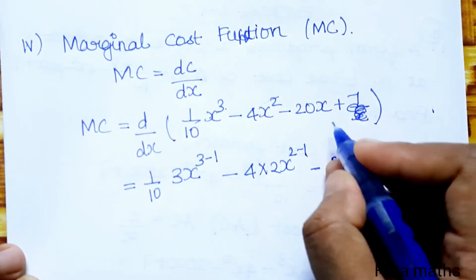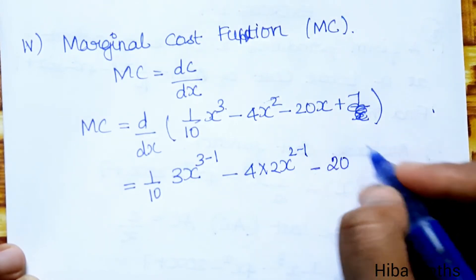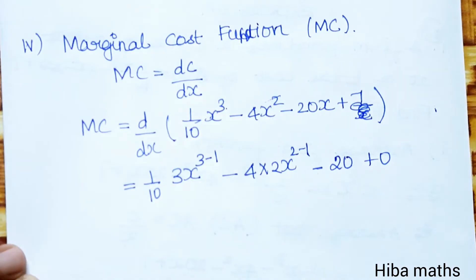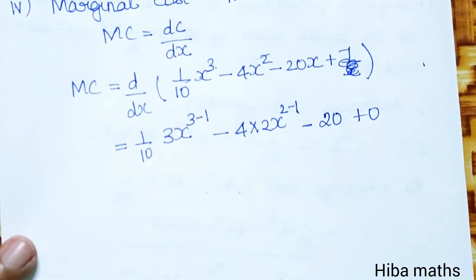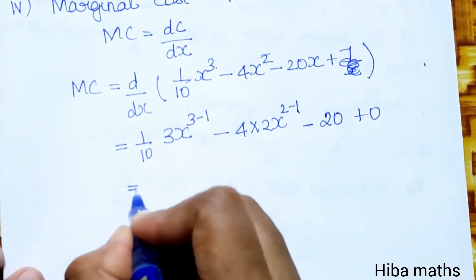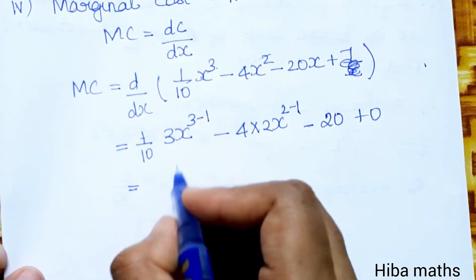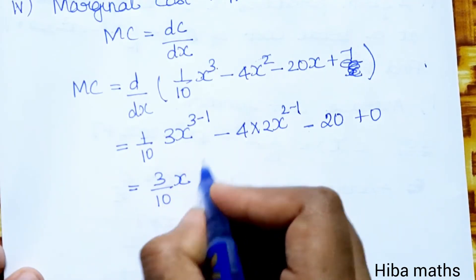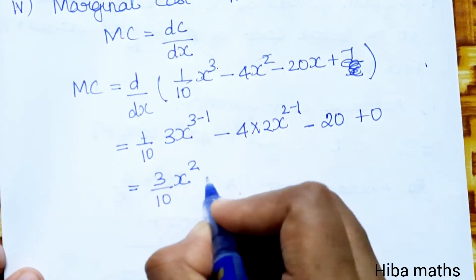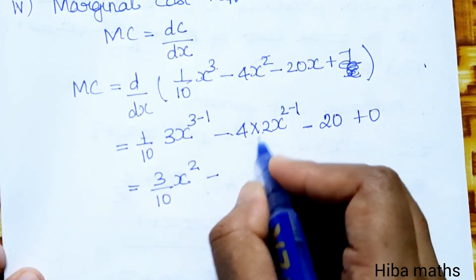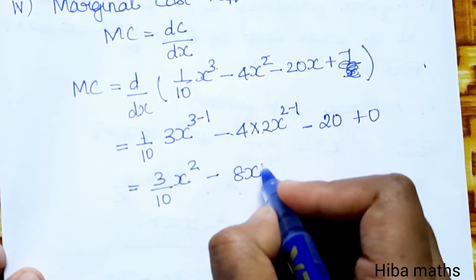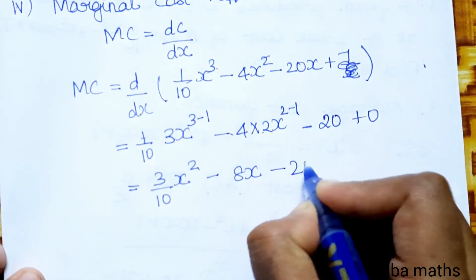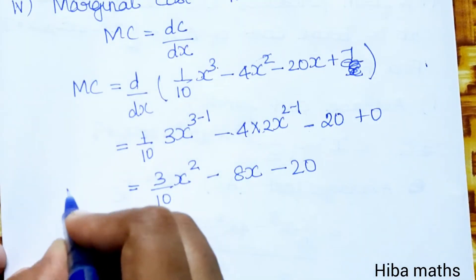Differentiating, the constant term becomes 0. Simplifying: 3 times 1/10 gives 3/10, power 3 minus 1 gives x². Minus 4 times 2 gives 8, power 2 minus 1 gives x¹. Minus 20. So MC equals 3/10 x² minus 8x minus 20.